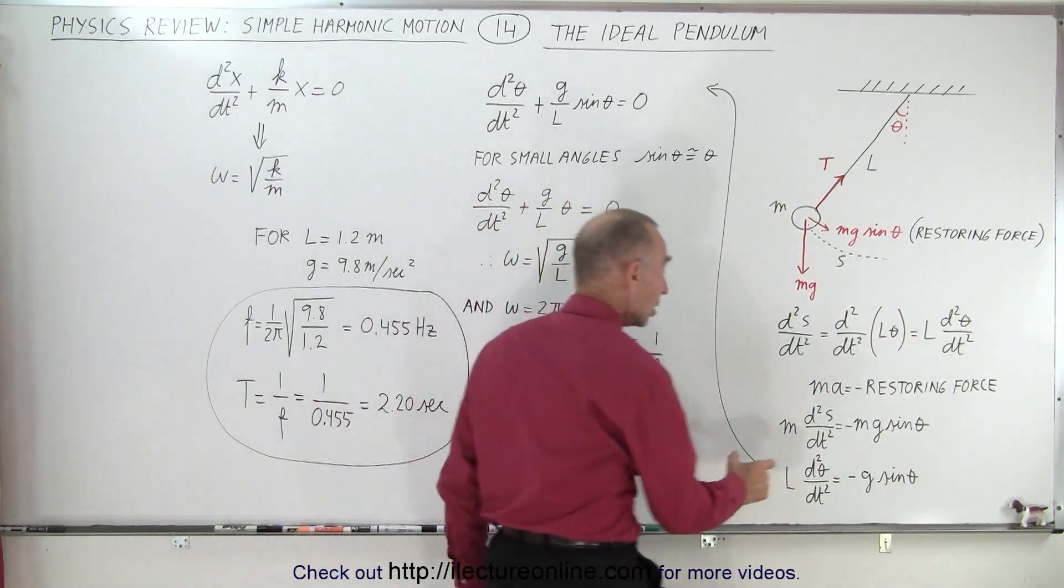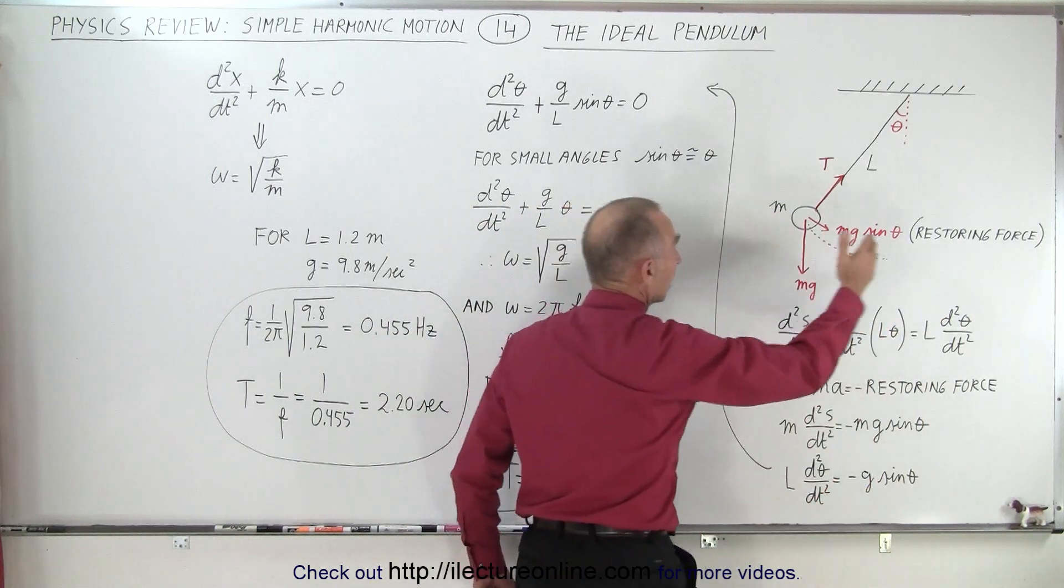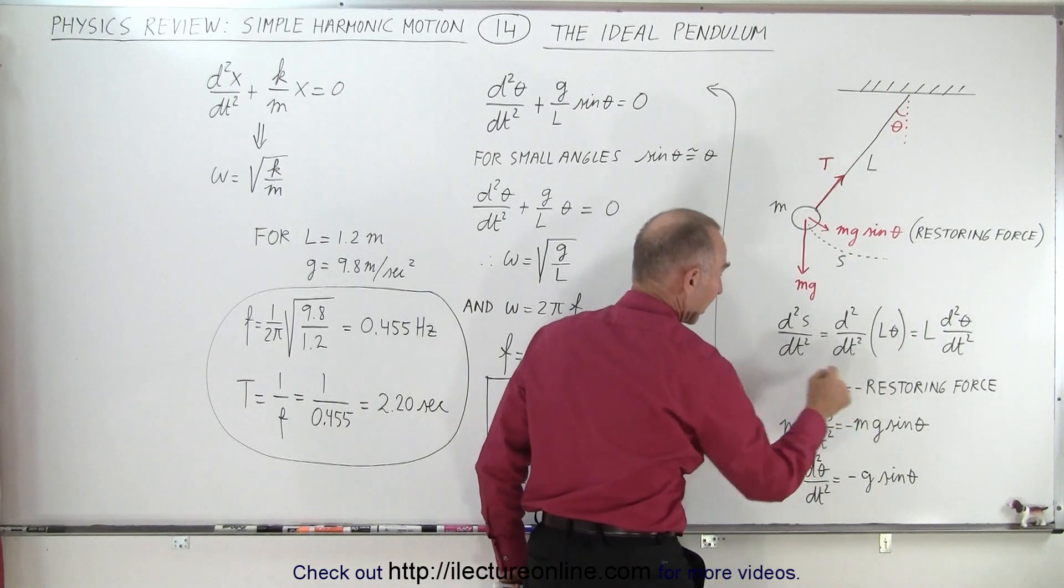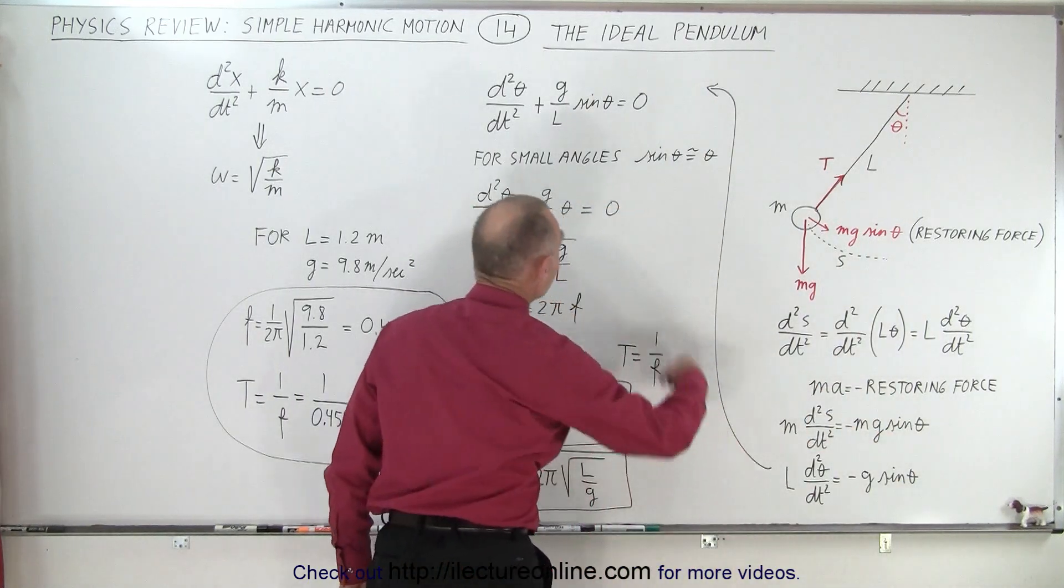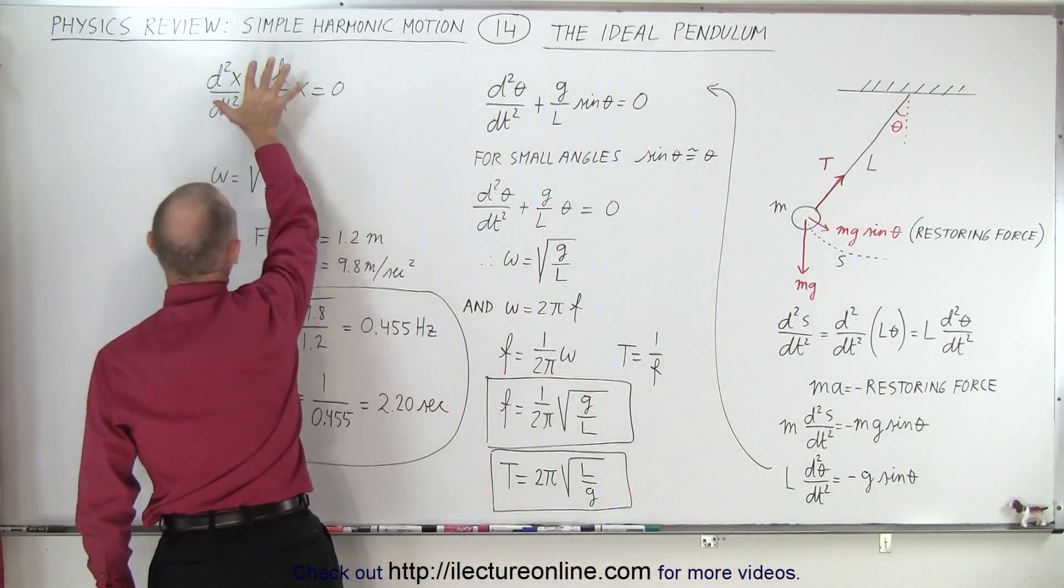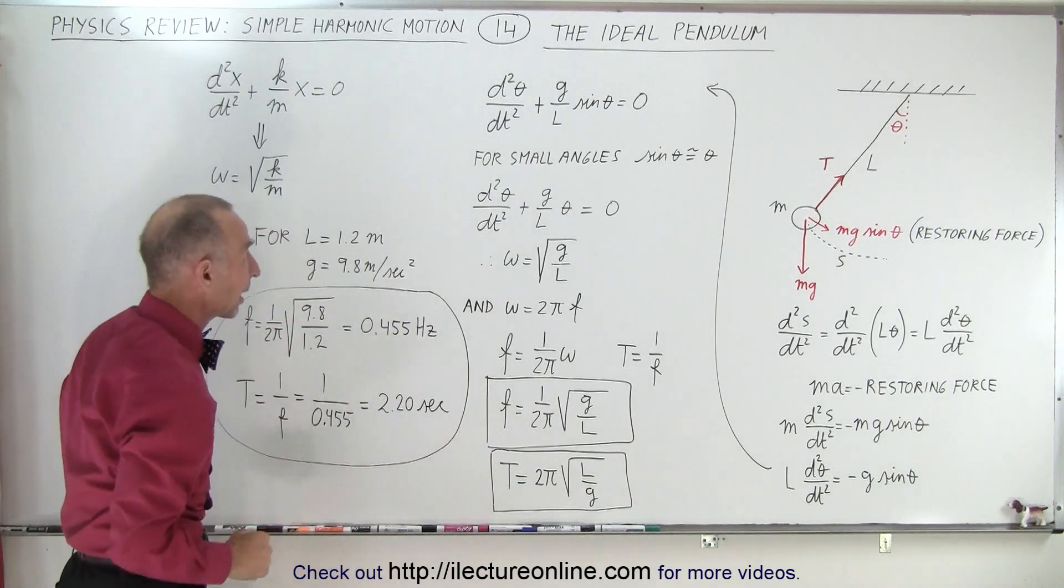And then using Newton's second law that Ma equals the restoring force. Remember, when we push the pendulum in one direction, the restoring force is in the opposite direction. That's where the negative comes from. So we end up with this equation right here. And then if we turn that into our differential equation, notice it looks almost exactly the same as it does when we have a spring, a mass on a spring that's oscillating back and forth.